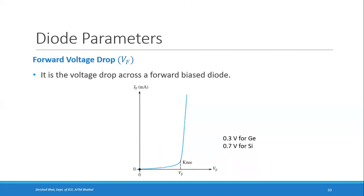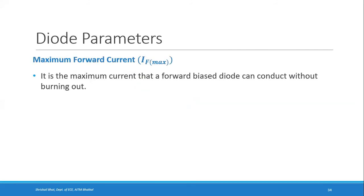When using components in any circuit, you must operate within the specified ranges. The maximum forward current is the maximum current a forward biased diode can conduct without burning up. If more current flows, the junction temperature increases beyond its limit and the diode literally burns. That is why we normally use a resistor in series with the diode — to limit the current that flows.